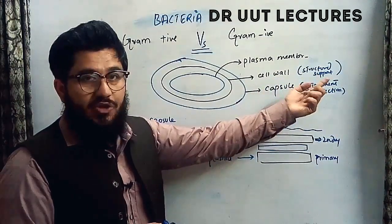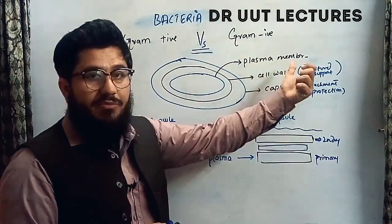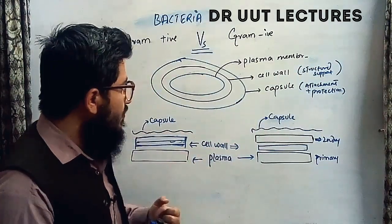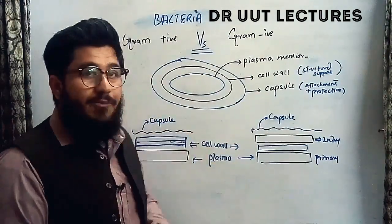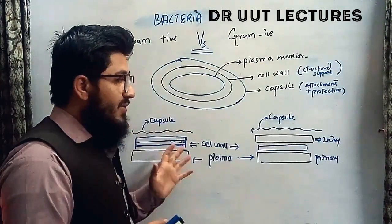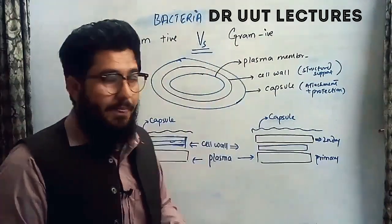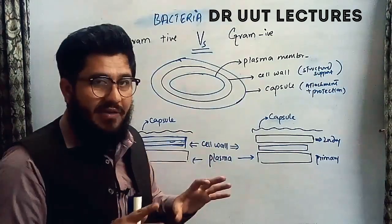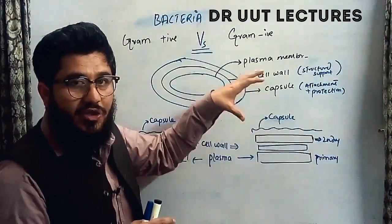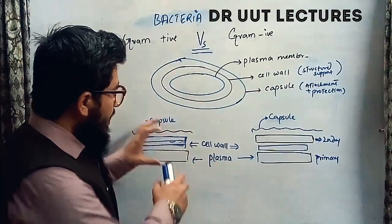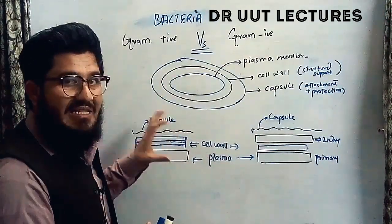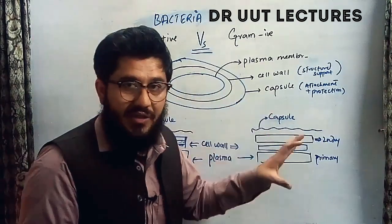Now let's come towards the main point — the difference between the gram-positive and gram-negative bacteria. The main difference actually lies in the structural composition. Structurally, the gram-positive bacteria is different from the gram-negative bacteria.